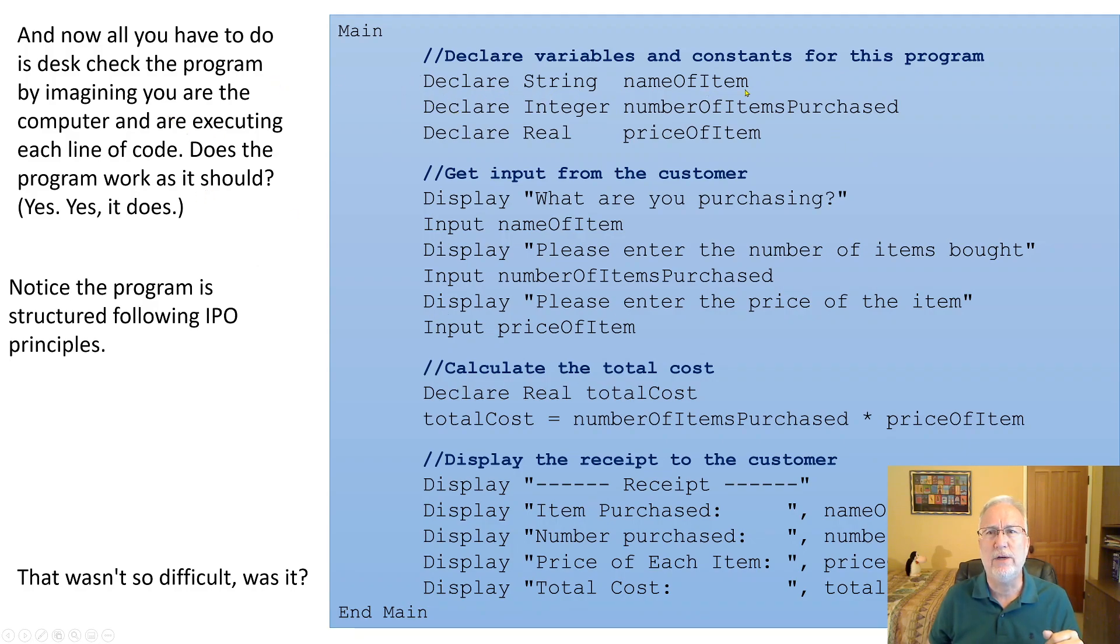We got declare string name of item. So we compress the name of the item into a camel case variable name. Number of items purchased. We got that. It's a real number, price of item, because you could have cents on there also. Input: we have prompts and input. So what's the name of your, what are you purchasing? You have item.